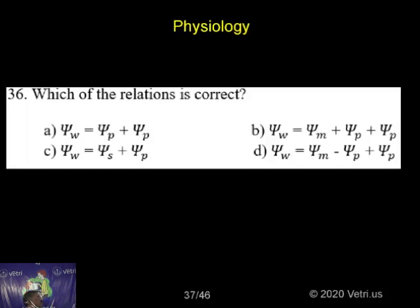Which of the relations is correct? The first reaction is phi w is equal to w, phi p. And the second one, phi w is equal to phi m plus phi p plus phi p.